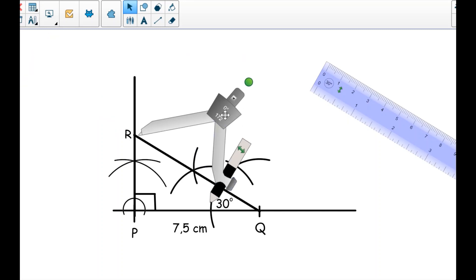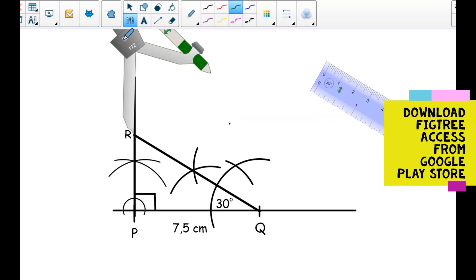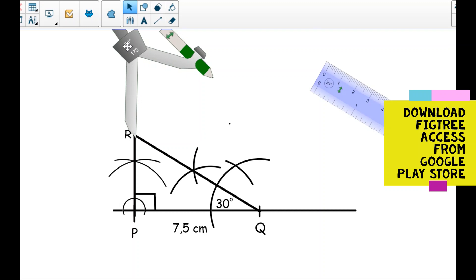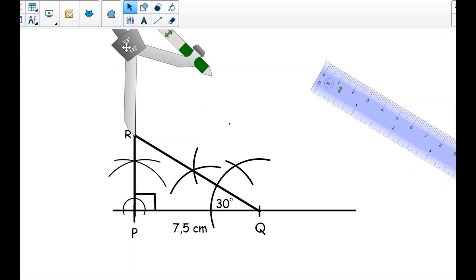You extend your compass distance until it is more than half of the line. Let me change my ink to green so that we can see the arcs.